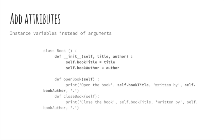It goes by the name __init__, or initializer, and is one of the methods in the class definition. To illustrate the use of attributes, here are changes to the Book class so that the virtual book is given a title and author when it is created, so that they can be referenced from the methods.